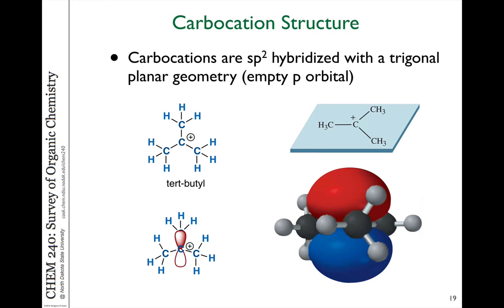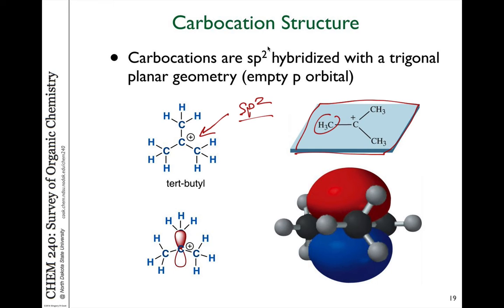In order to truly understand the origin of Markovnikov selectivity in the addition of hydrogen halide, we need to understand the structure of the intermediate, and the intermediate is a carbocation. Carbocations — carbons that are lacking one bond in electrons — are sp2 hybridized and planar. The structure of a carbocation is a plane where the three groups are all in a plane, just like a pi bond or double bond.